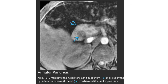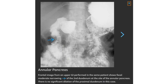This is a T1-weighted fat-saturated MRI showing the hypointense second portion of the duodenum encircled by the hypointense pancreatic head, consistent with annular pancreas. A frontal image from an upper GI performed in the same patient shows moderate narrowing of the second portion of the duodenum at the site of the annular pancreas, with no significant dilation of the proximal duodenum in this case.